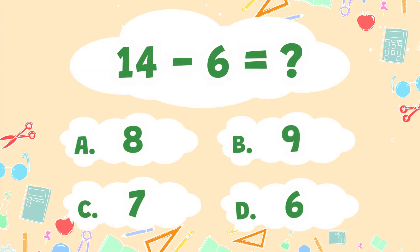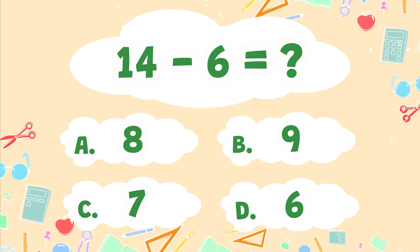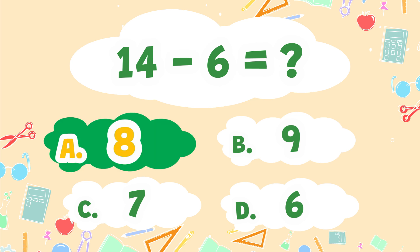What is 14 minus 6? A. 8, B. 9, C. 7, D. 6. The correct answer is A. 8.